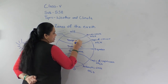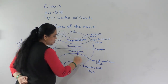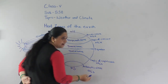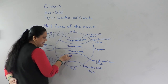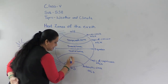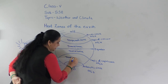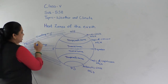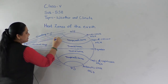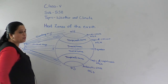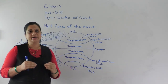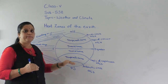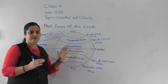The region between the Tropic of Cancer and the Arctic Circle, and similarly the region between the Tropic of Capricorn and the Antarctic Circle, is called the Temperate Zone. This zone receives slanting rays of the sun, so the climate is neither too hot nor too cold. The areas in the Temperate Zone have a moderate climate.